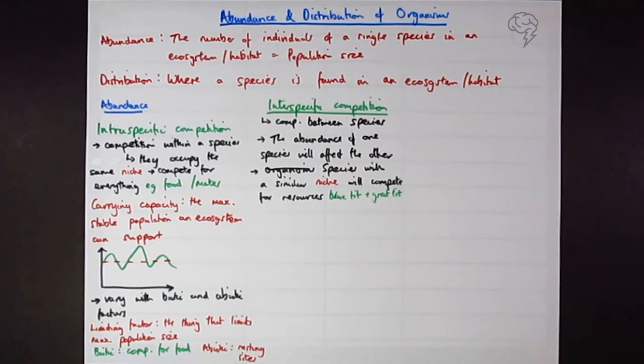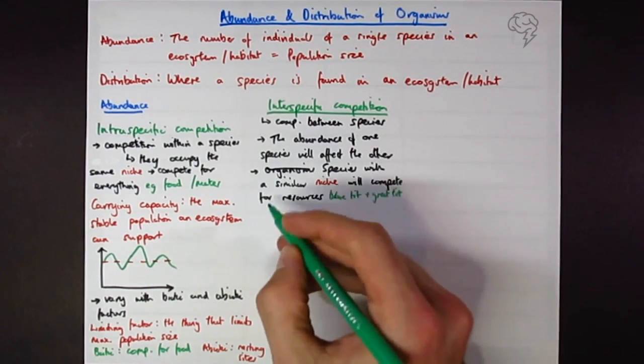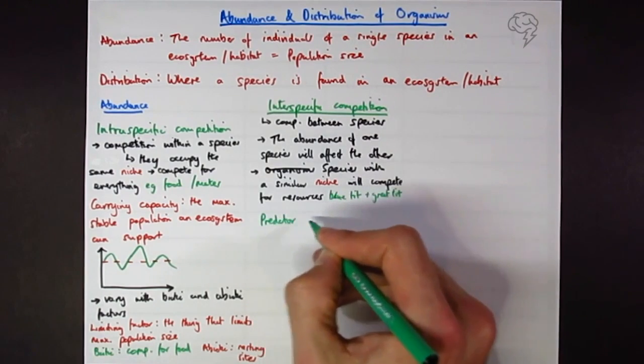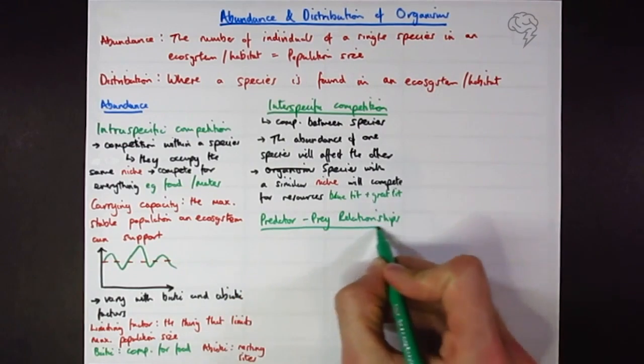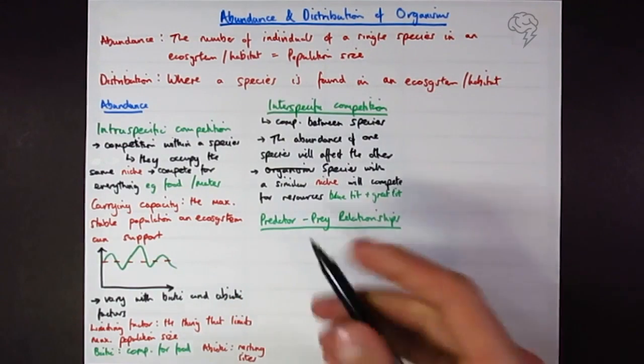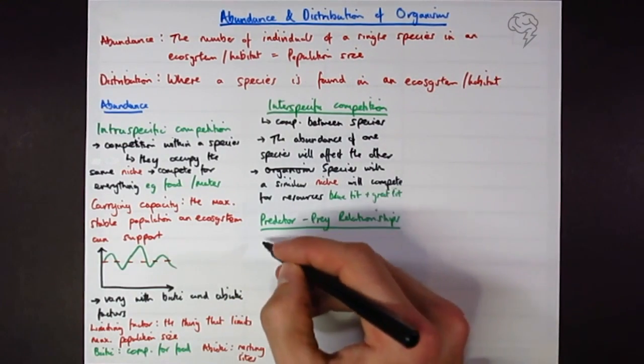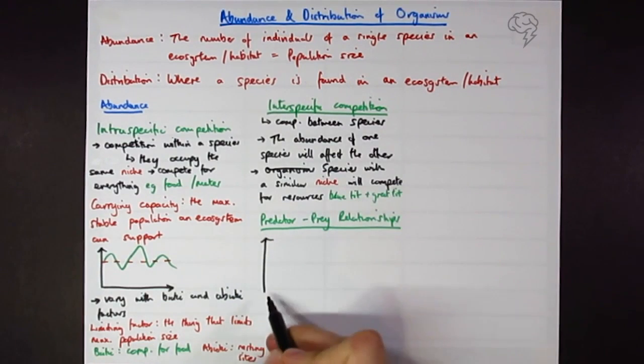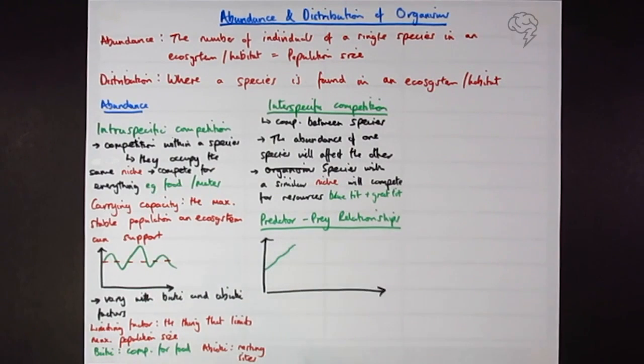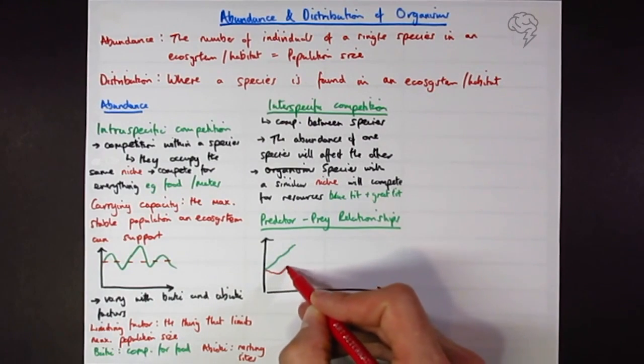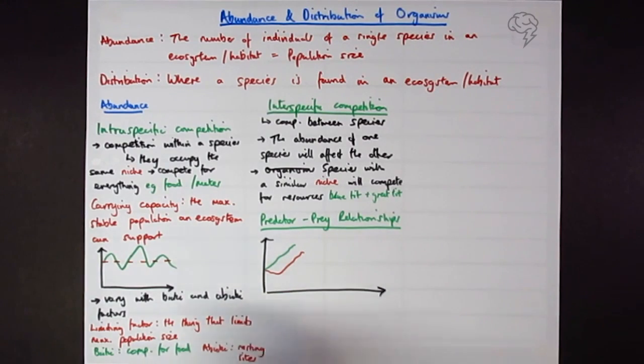Another thing that we can look at is the predator-prey relationships. This is pretty classic - you'll have done this at GCSE - another little graph. Let's say we've got a rabbit and a fox. Maybe the rabbit's numbers begin to increase, it's going to fluctuate a little bit on the way. As a result, always behind is going to be the fox numbers coming up.